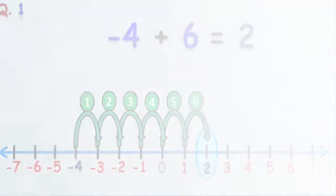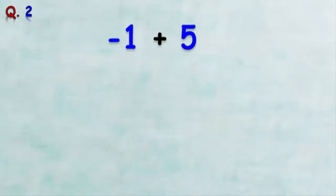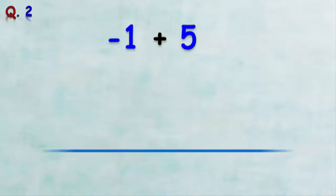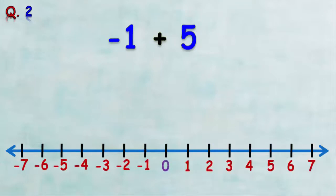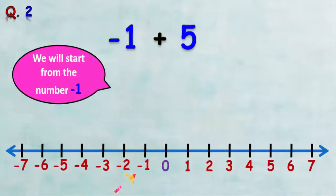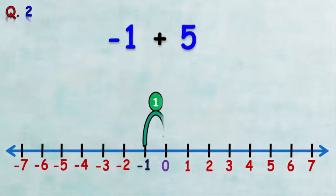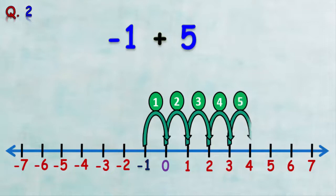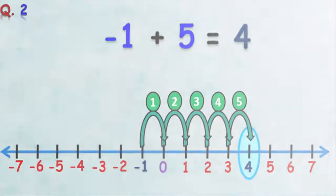Now we are going to solve another example. Second example: find negative one plus five. We want to find the sum of negative one and five. We draw a number line, start at negative one, and make five forward jumps: one, two, three, four, five. We get positive four, so the sum of negative one and five is positive four.